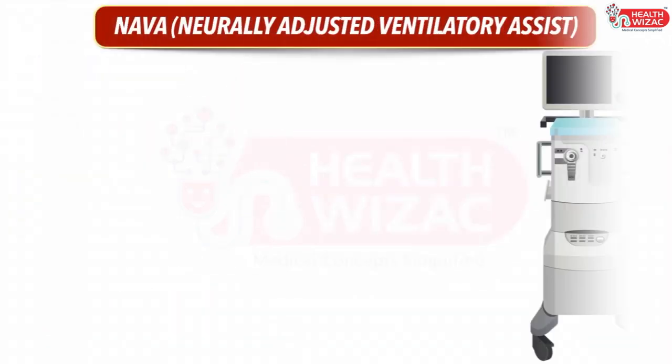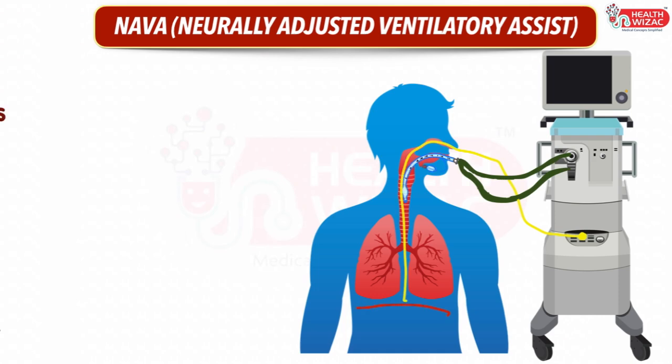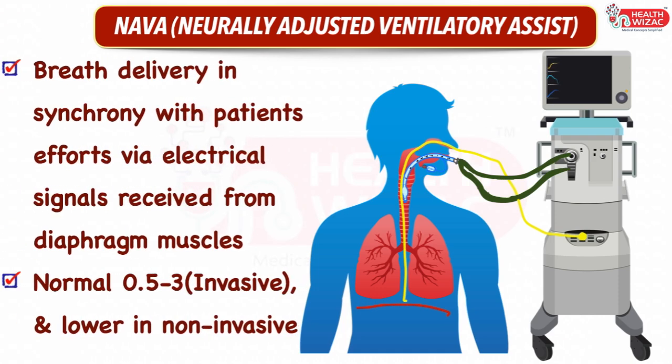Next is NAVA, or Neurally Adjusted Ventilatory Assist mode. It is an assist mode of ventilation in which the ventilator delivers breaths in synchrony with the patient's efforts via electrical signals received from the diaphragm. Normal NAVA level ranges between 0.5 to 3 for invasive mode and is lower in non-invasive mode.